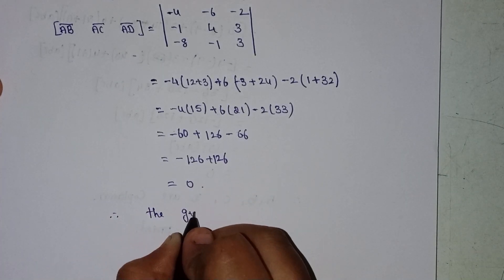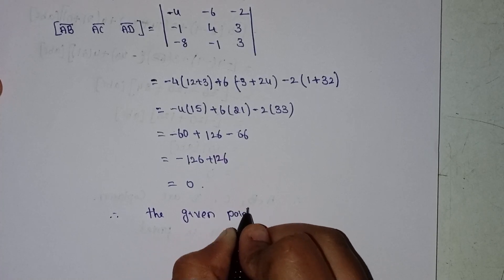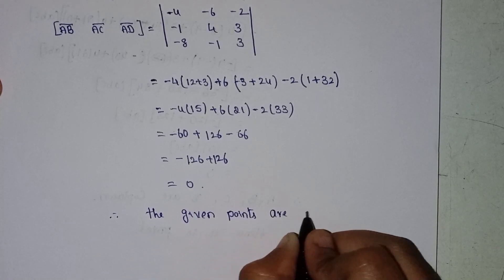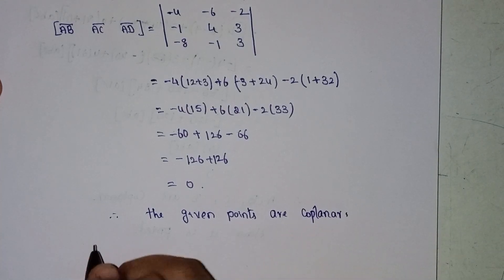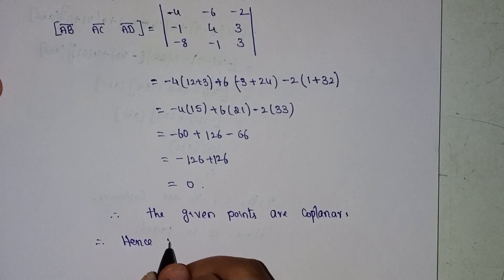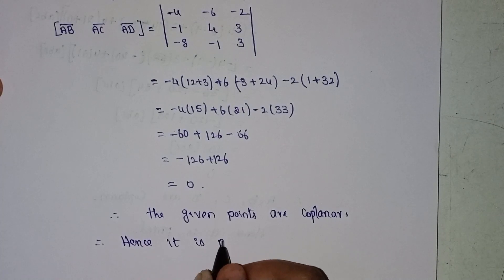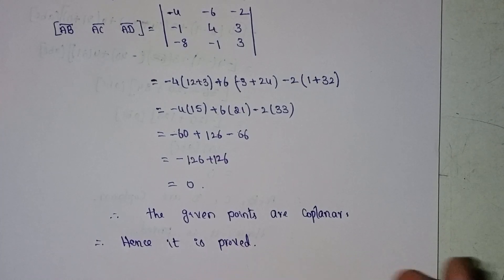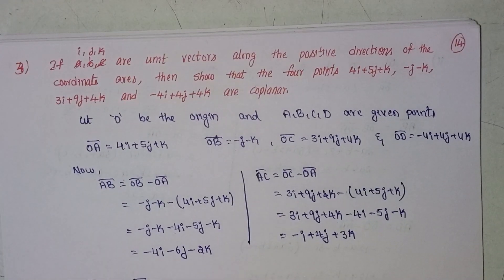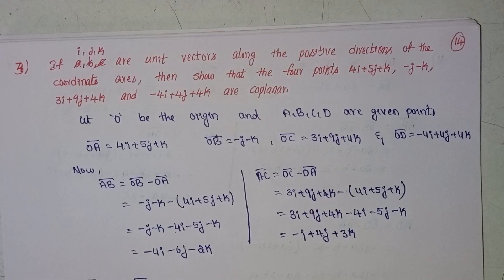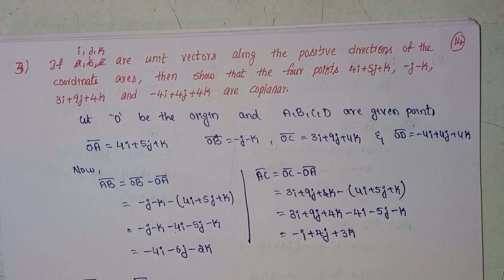Since the determinant equals 0, the given points are coplanar. Hence it is proved. This was question number 3 solution. We will discuss question number 4 in the next class. If you have any doubts please comment, and please like, share and subscribe. Thank you for watching, take care.